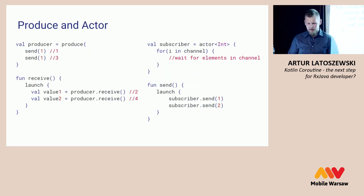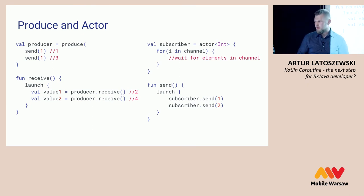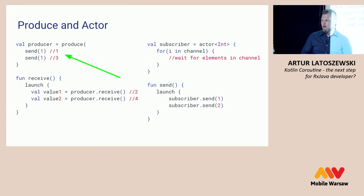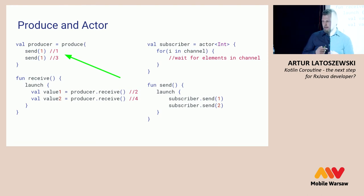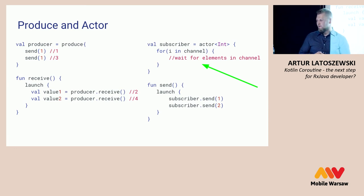Channels have two sub-builders: "produce" and "actor". They work the same as a normal channel, with one difference: with produce, the producer can only send data to the channel — you can only send inside the producer. And with actor, it can only receive data inside the actor.